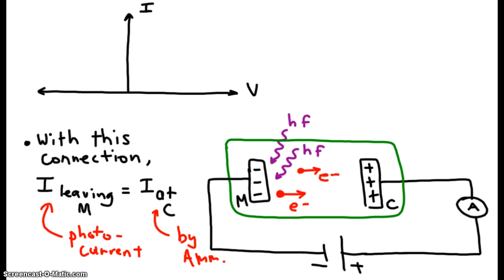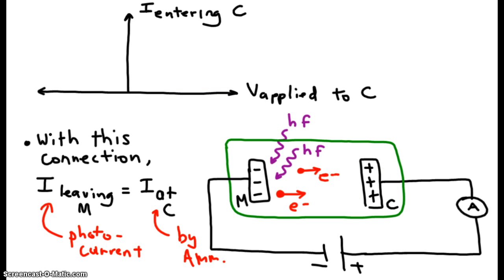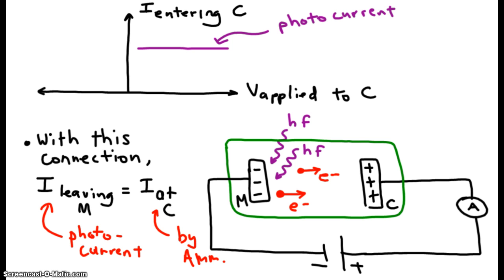The current at C is what we actually measure with the ammeter. The graph shown above tells us how the current entering the collector plate depends upon the potential or voltage applied to the collector plate. When the voltage applied at the collector plate is positive — this half of the x-axis — we acquire a measurement equal to the photocurrent. That should be a straight line: as long as we have some positive voltage applied at the collector plate, we always measure the same value, which is simply equal to the photocurrent.